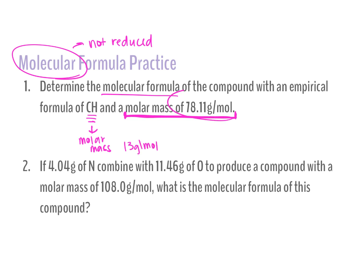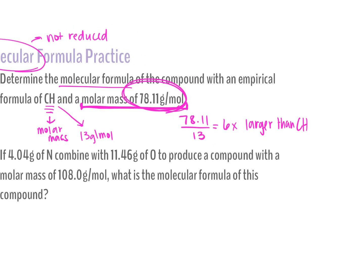My unknown compound has a molar mass of 78, and my empirical formula has a molar mass of 13 — those don't match, so they are not the same compound. I take 78.11 divided by 13 to figure out how many times larger the molecular formula is than the empirical formula. That gives me six. This step should always come out to a whole number; if it doesn't, we may have miscalculated molar mass.